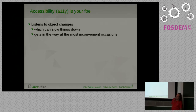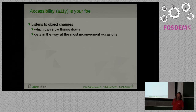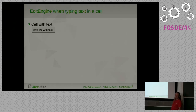But accessibility can also be your foe, especially if you're a coder, because it listens to object changes which can slow things down quite significantly. On modern systems the accessibility framework is enabled even if you don't have any screen reader in use, and it can get in the way at the most inconvenient occasions — and when it does, it's sometimes very hard to debug.